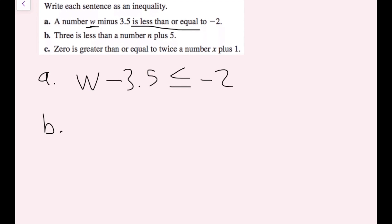For part B, we have '3 is less than a number n plus 5.' So I'll write that: 3, and then less than a number n plus 5, that's just n plus 5. And we're done with this one.